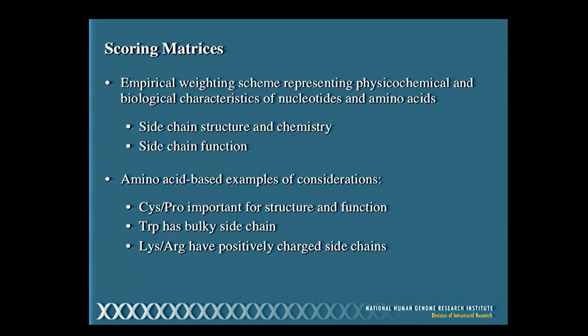Once we've aligned two sequences, how do we measure how good the alignment is? We use scoring matrices — empirical weighting schemes that assign numerical values based on the physical, chemical, and biological characteristics of either nucleotides or amino acids. These take into account things like side chain structure, chemistry, and function. We know that cysteine and proline residues help keep parts of a protein together, tryptophan has a bulky side chain accommodated only in certain protein regions, and lysines and arginines are positively charged — important for DNA binding proteins.